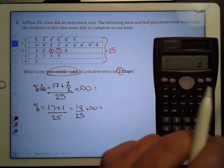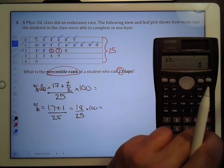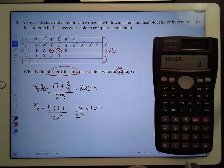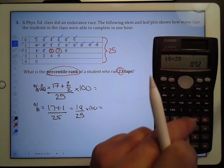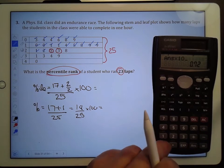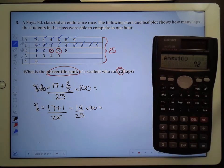Clear. 18 divided by 25 is equal to that, times 100, and you get 72.